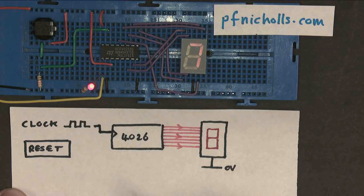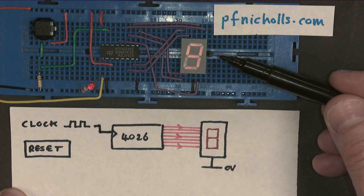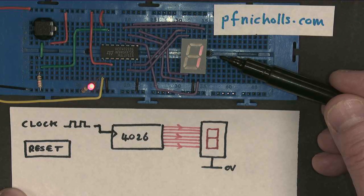It's called a decade counter because it's counting every 10 pulses and then starting again, so it goes from 0 to 9.